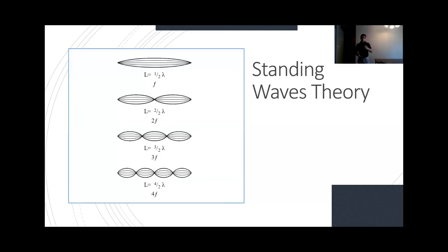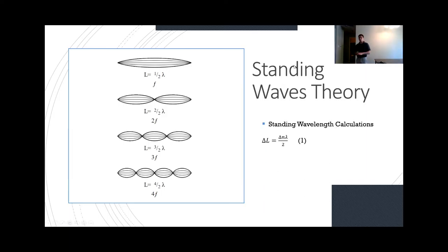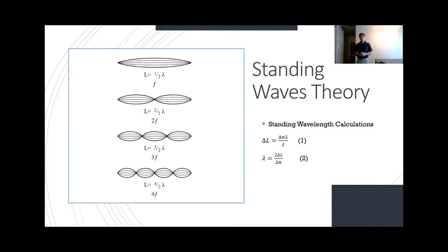With the standing waves theory, I put up an image showing mode one at the top, mode two underneath that, mode three and mode four after that. As Logan showed, we get to the calculations. The standing wave calculation is: delta L is equal to delta N times lambda over 2. Through rearranging that, we get that lambda is equal to delta L over delta N. We're going to use the standing waves theory as a good basis for how our Lloyd's mirror experiment works, and to see if the wavelength results actually match.